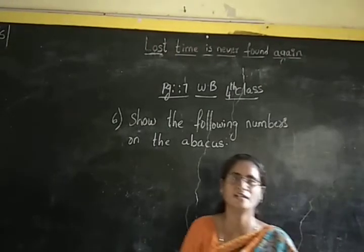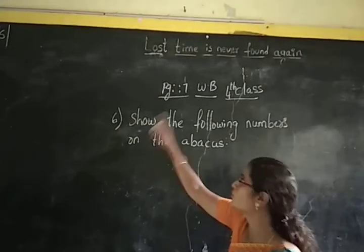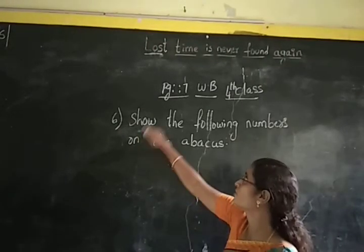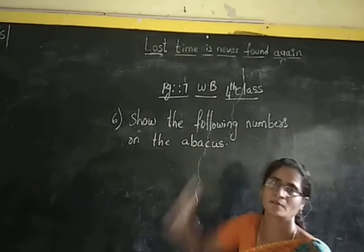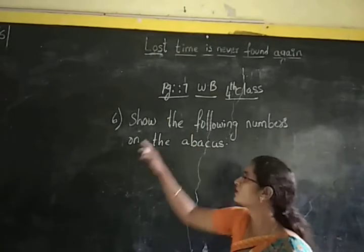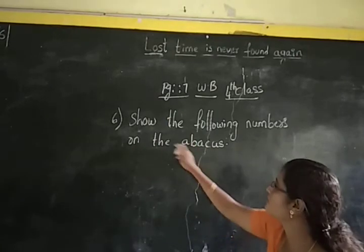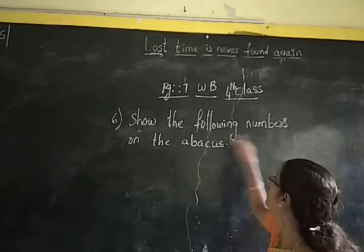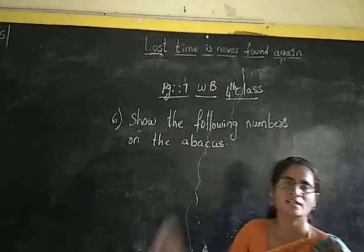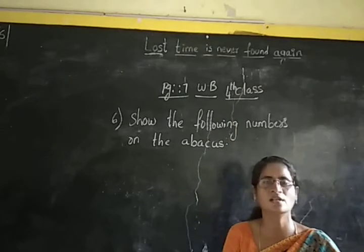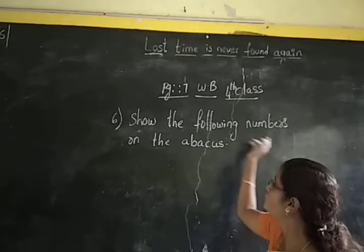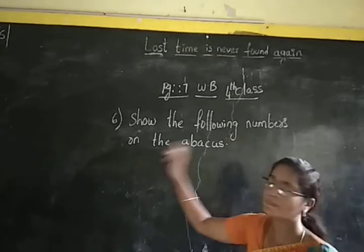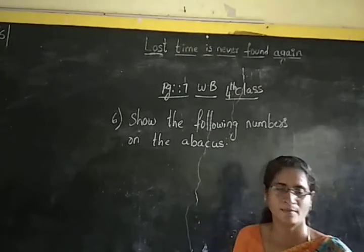Good morning children. Today we are going to do question 6 on page number 7 of the workbook. In question 6, we have to show the numbers given in the abacus. Show the following numbers on the abacus.